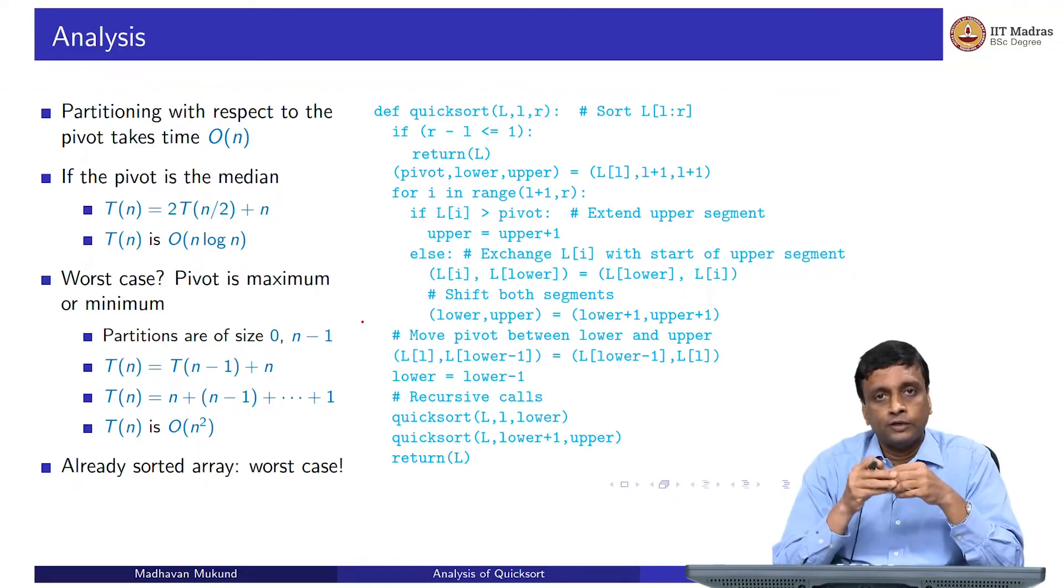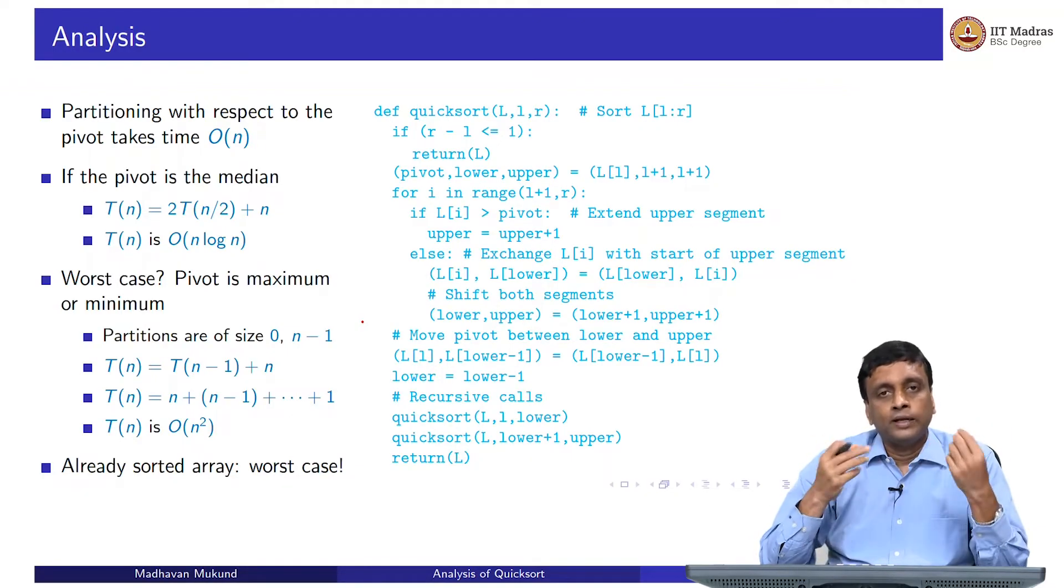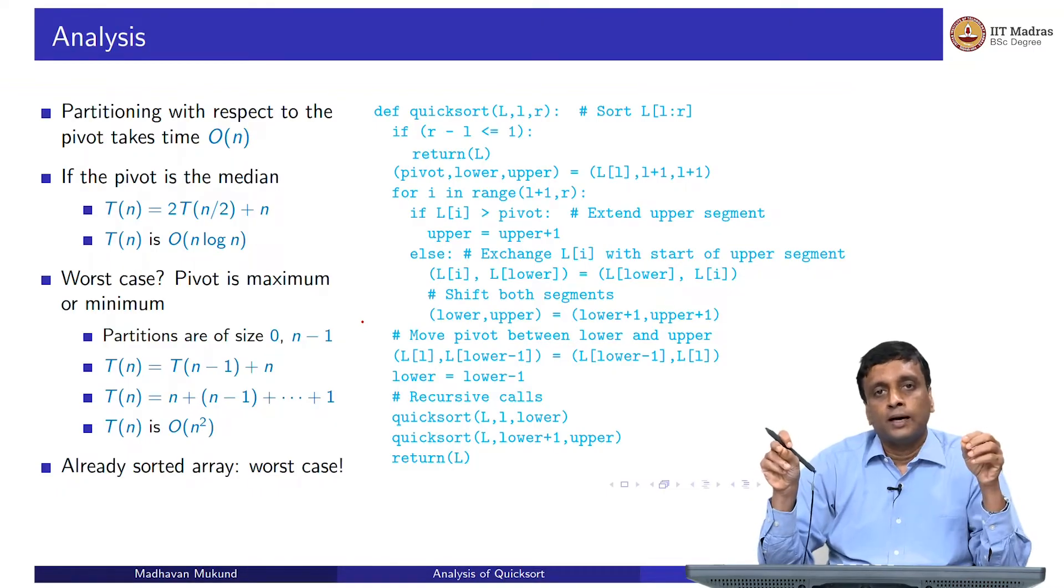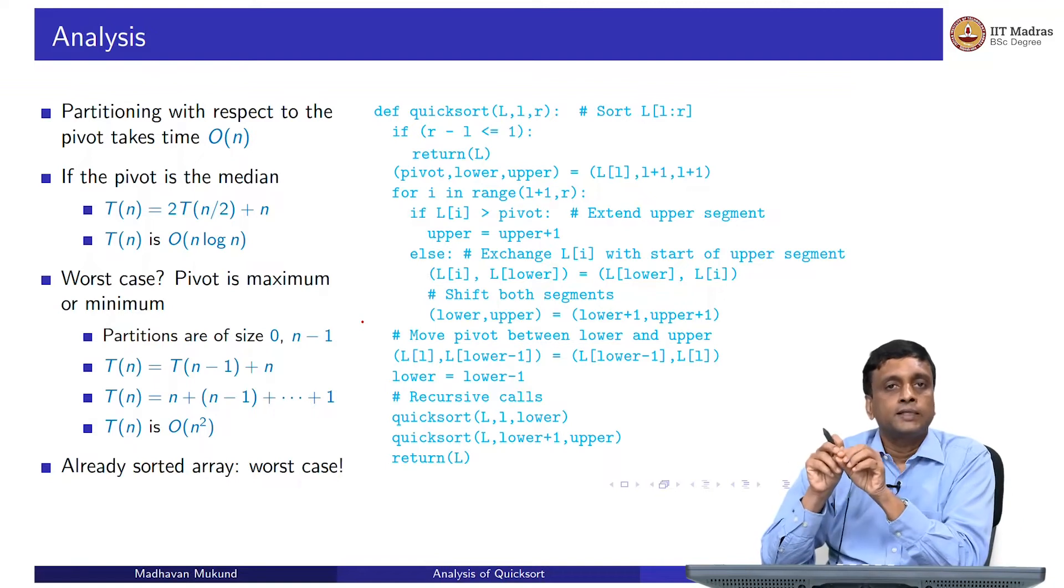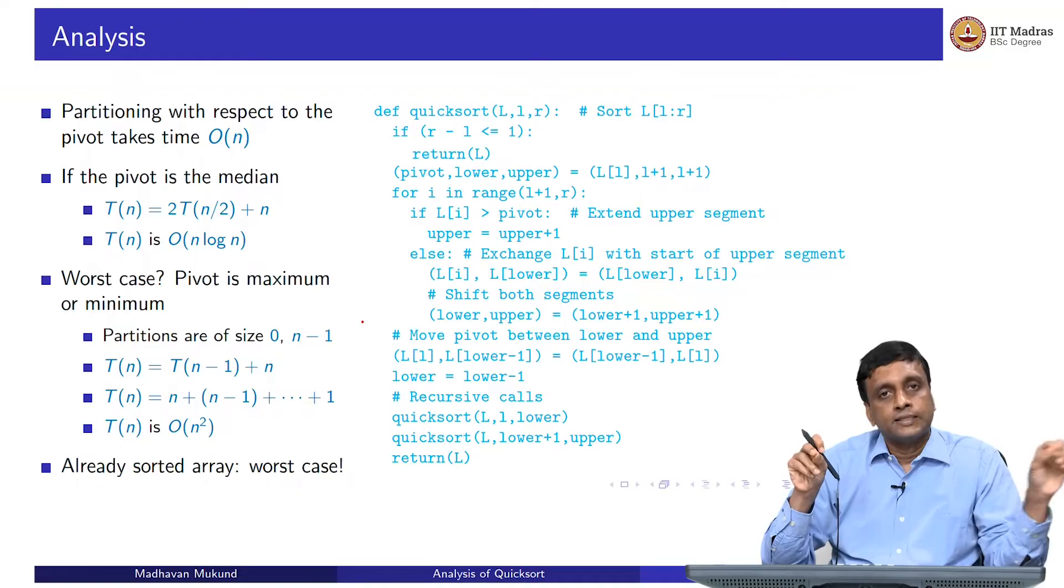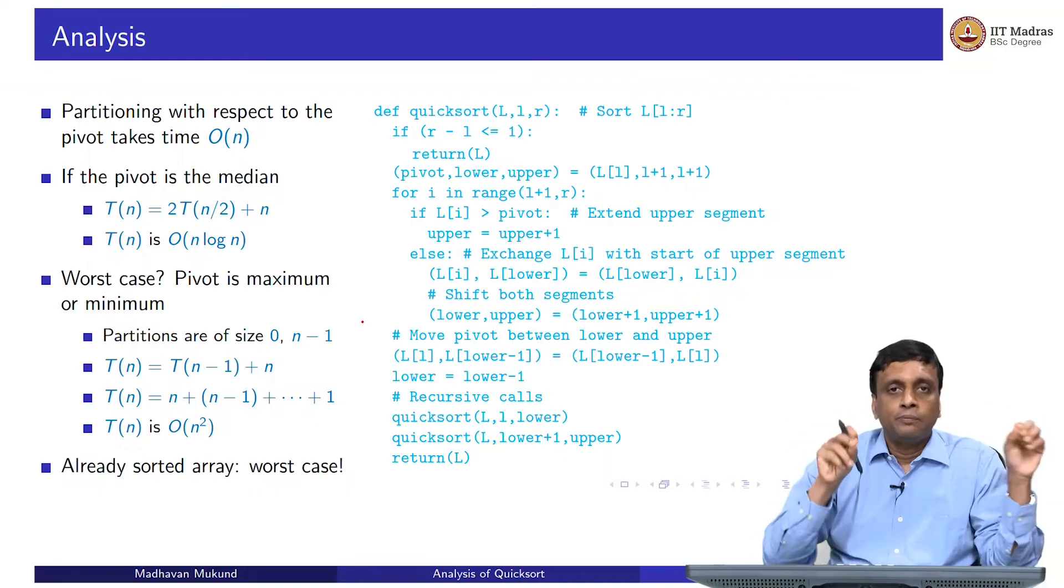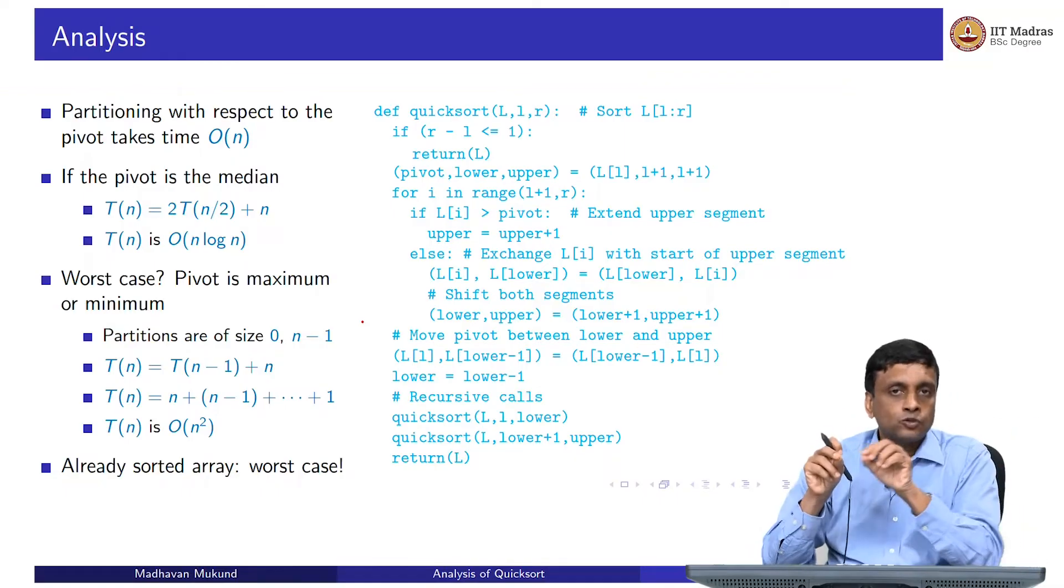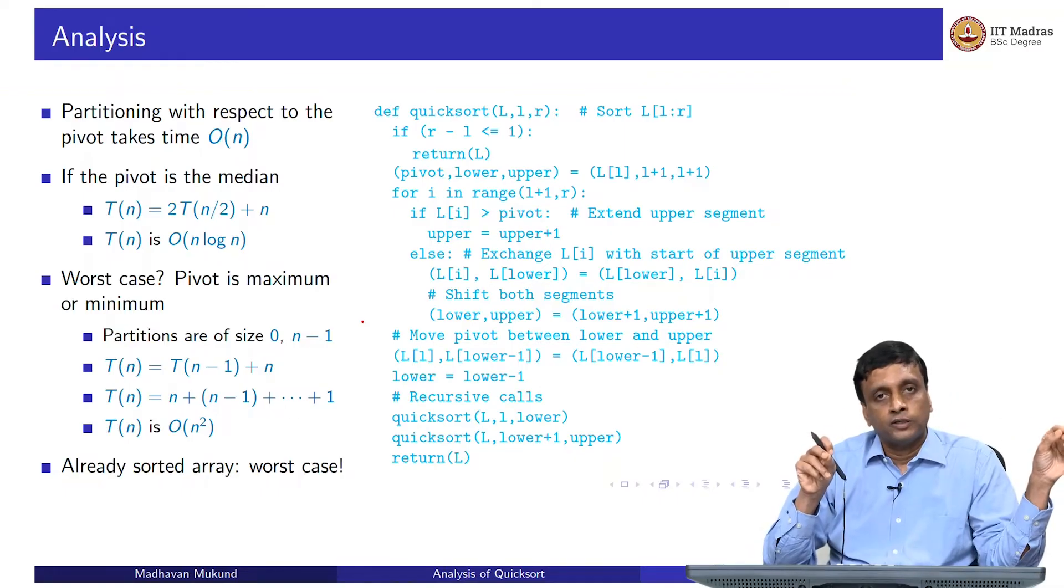For instance, if I am sorting in ascending order, and I give you an array in ascending order, and pick the first element as pivot, then the first element is the smallest one. It will produce an upper partition consisting of all the remaining elements. But remember, they are generated in the same sequence. The upper partition will again be a sorted sequence with the first element as smallest one, which again produces an upper thing with n minus 2 sorted elements and so on.